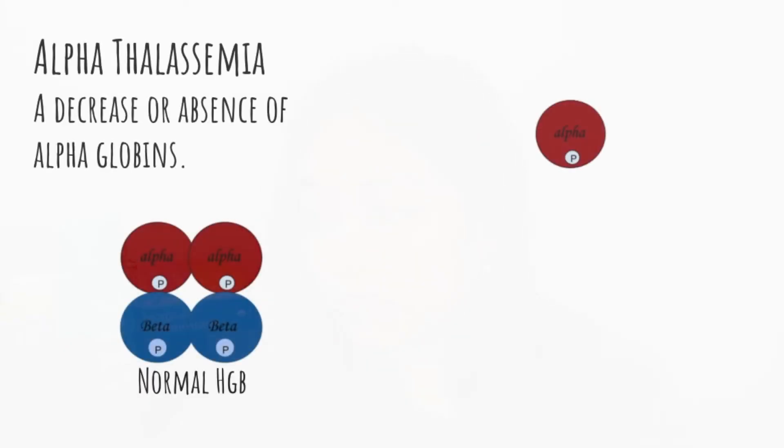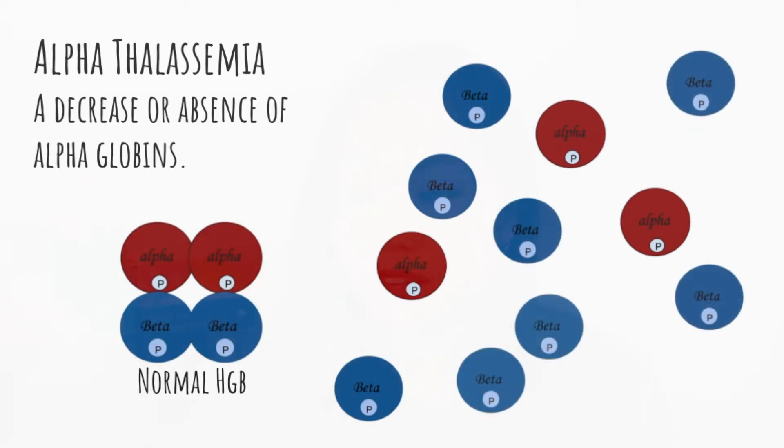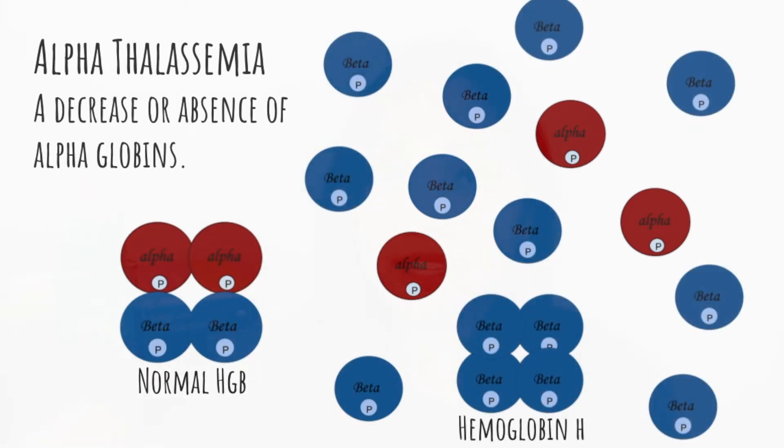So let's summarize the pathophysiology of thalassemia. There is a decrease or absence of one globin chain, causing an increase and excess of the unmatched globin chain. If you have a defective alpha gene, you will have a lot of beta chains that are not going to be paired with alpha chains, creating an imbalanced amount.